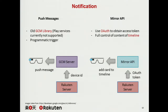Another way to build a glassware application is to use the Mirror API. The Mirror API is based on OAuth, and the server can directly — after obtaining the OAuth token — send a message through the Mirror API and manage the timeline, for example, adding a new card to the timeline.